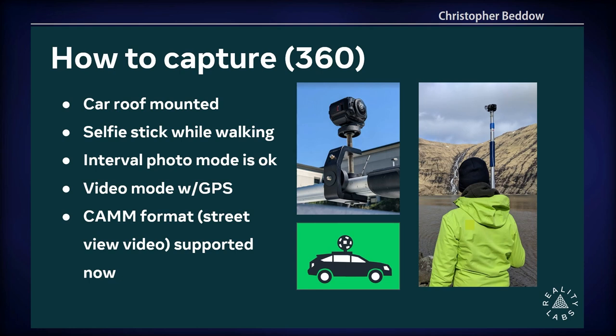A 360 camera is very similar — many ways to mount it to a vehicle, or hold it on top of a selfie stick to get it high off the ground. There's an interval photo mode as well as a video mode, both of which can be geotagged with the right cameras. When you upload, we select the best frames with the best GPS. We also support the Street View video CAM file format used by many newer, higher-quality 360 cameras — just this last month we started supporting upload for that.